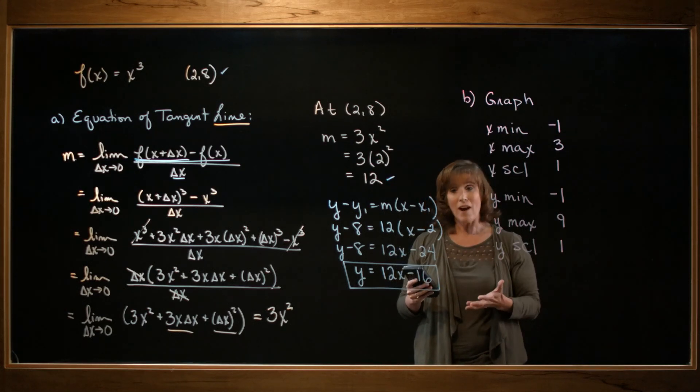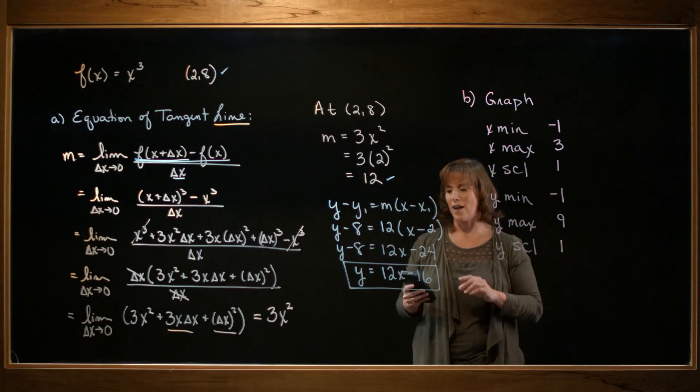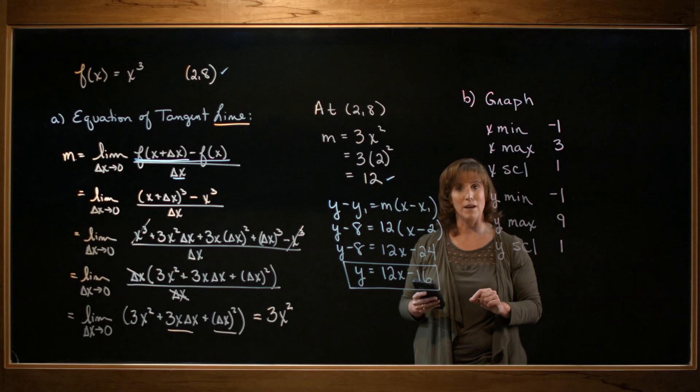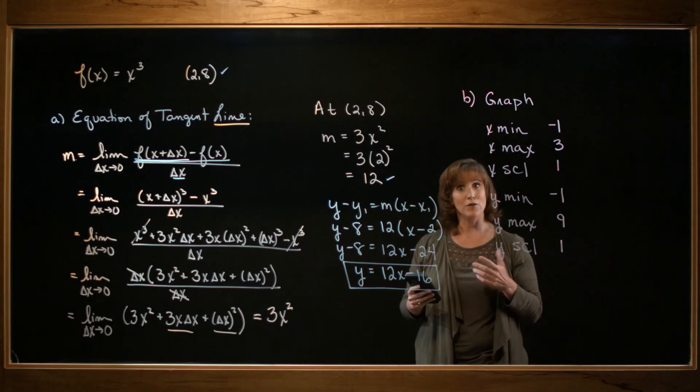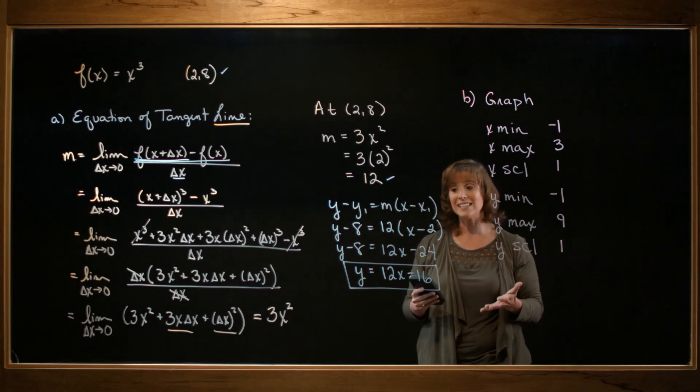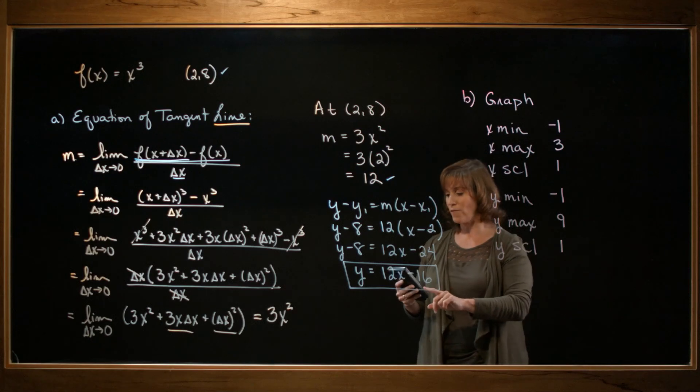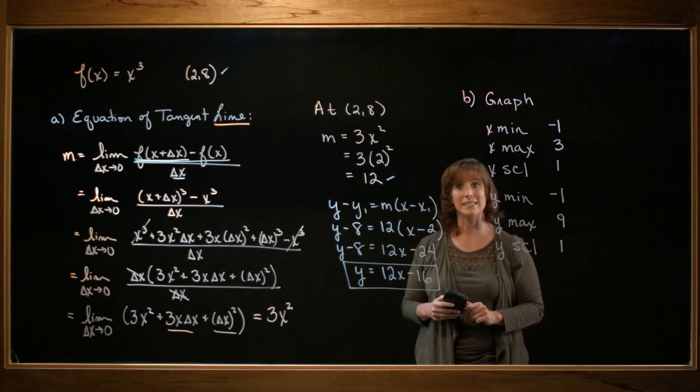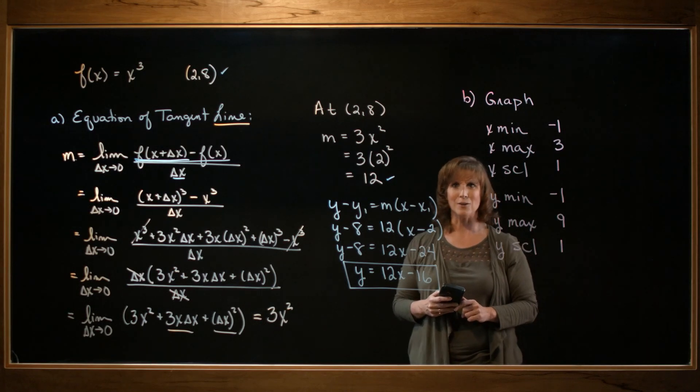One last thing. Some graphing utilities not only will show you a tangent line drawn, but it will also tell you what the slope and the y-intercept of that tangent line is. And if your calculator or graphing utility has that feature, then you can go ahead and verify that the slope was indeed 12 and the y-intercept was minus 16. I hope that helped.